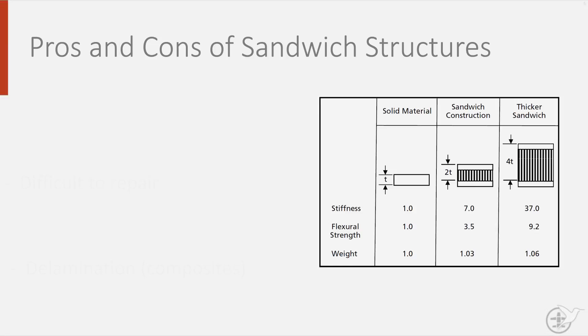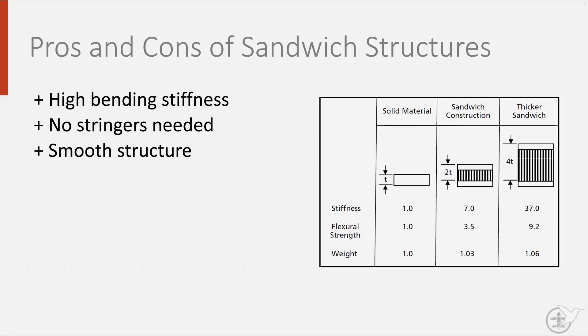Sandwich structures have an advantage that they have a high bending stiffness and therefore need no stringers. This is one of the reasons why this type of structure is often used for floor paneling. From the table you can see that a sandwich structure can be much more stiff and have greater flexural strength than a sheet of solid material of the same thickness, with a weight increase of only a few percent.